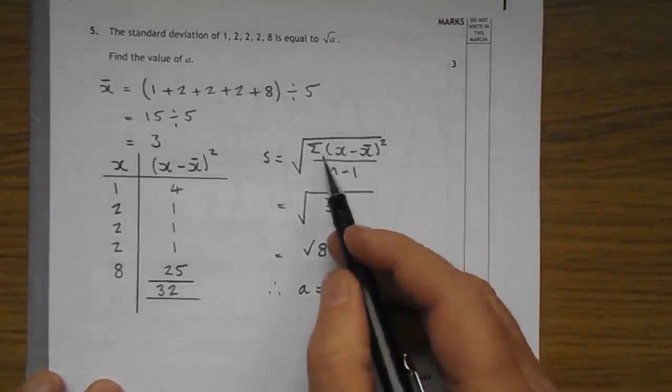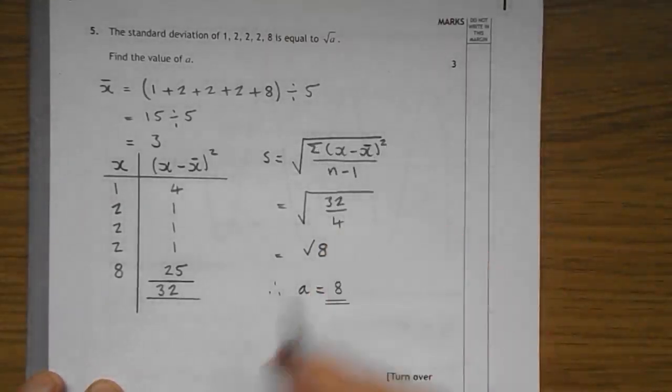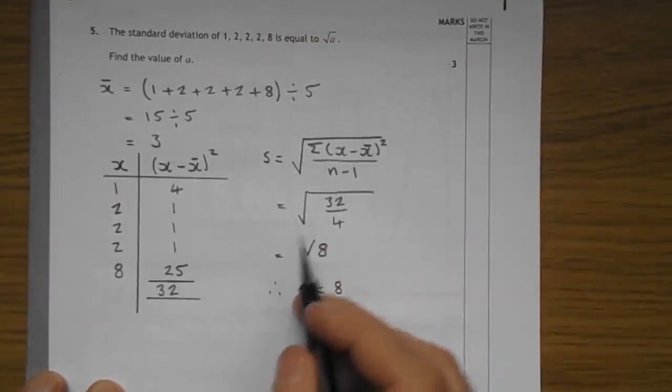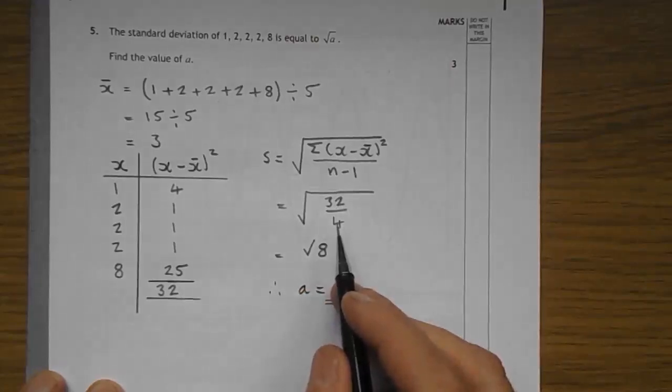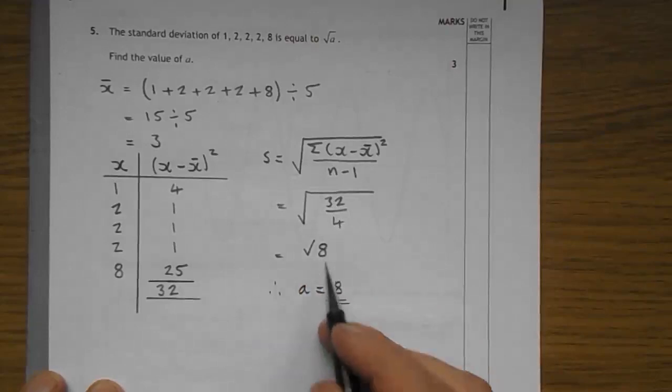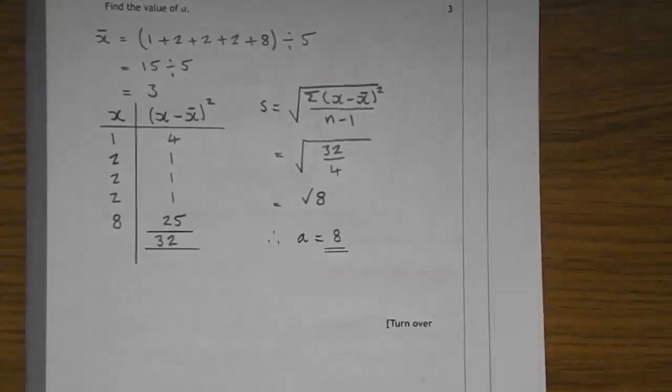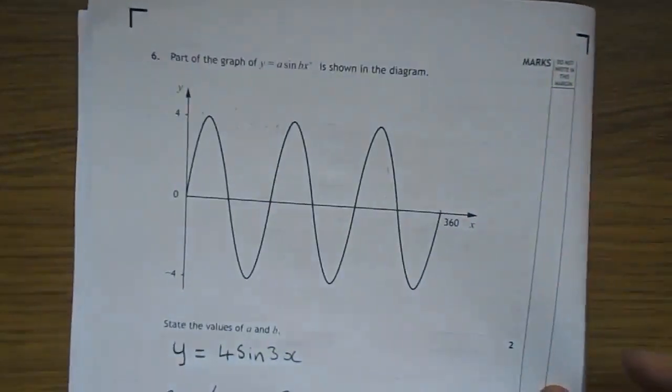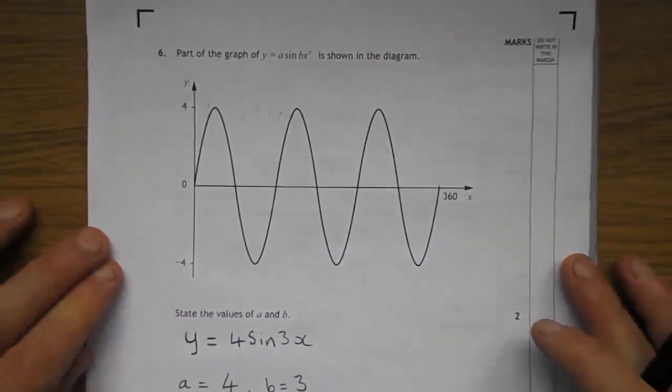So, moving over to this side. That is the sum of X take the mean squared. X take the mean squared, pardon me. That's your 32. There's 5 numbers. Take away 1. That gives 4. Root 32 over 4. 4 into 32 gives 8. So, it's root 8. So, A is 8.